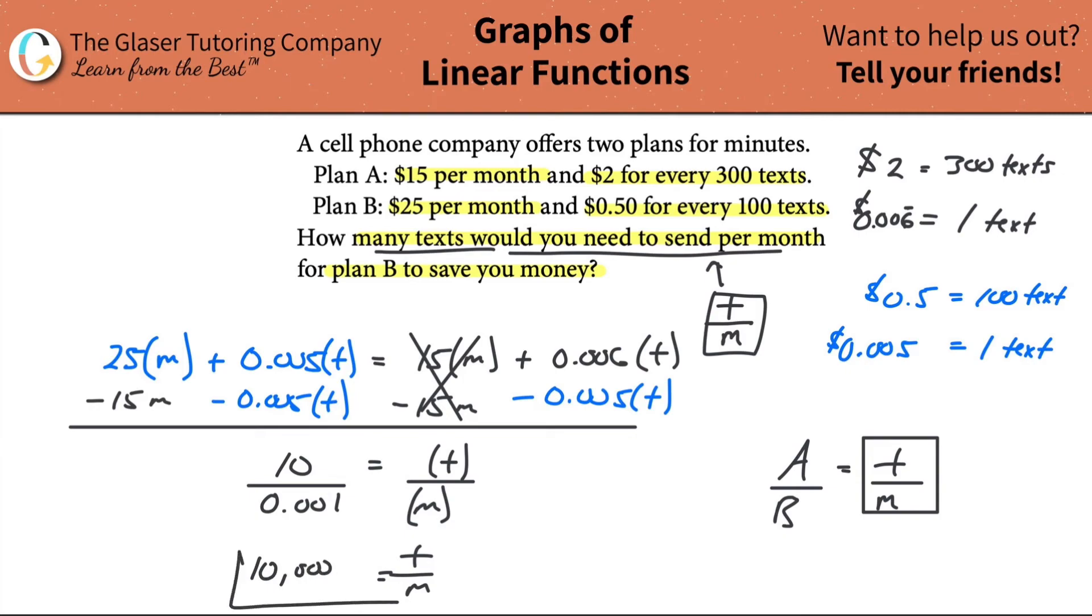So this is telling us now, in words, at 10,000 texts per month, Plan A is equal to Plan B.